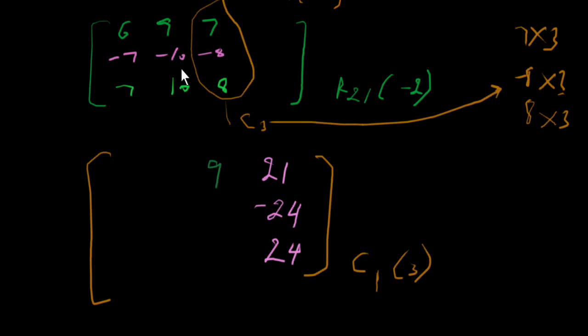6, minus 7, 7; 9, minus 10, 10. Like this, you can interchange the rows from one row to another row.